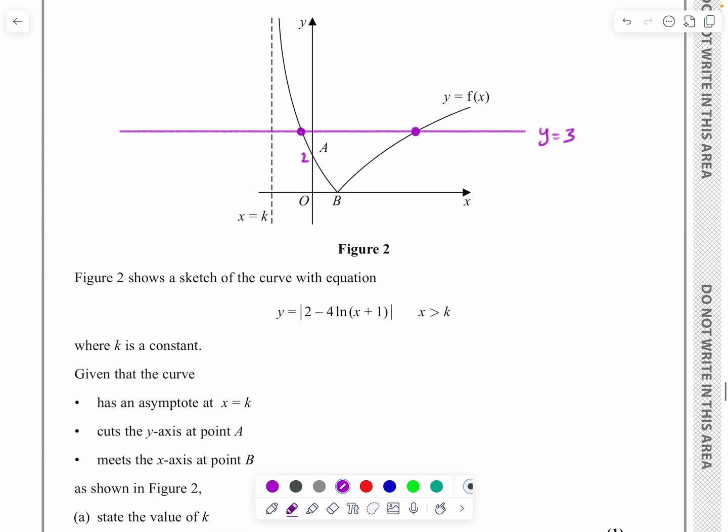We haven't really talked about the function here. This function would have carried on all the way down there if it had just been 2 minus 4 ln(x+1). But the fact that we have these modular signs in here means that we get it going up there as well. So this is the original curve and this is once the modulus has taken effect there. That's how I'm going to find these two points then.